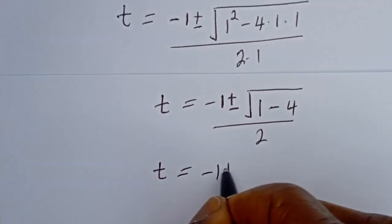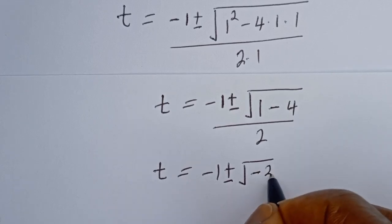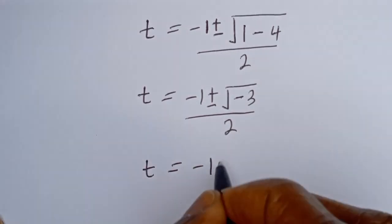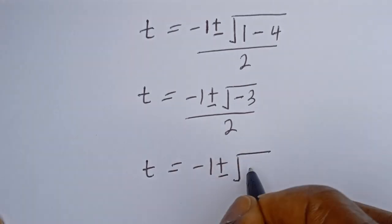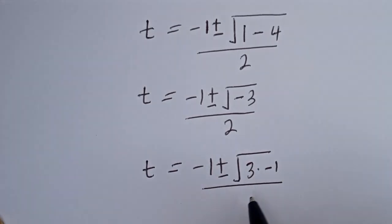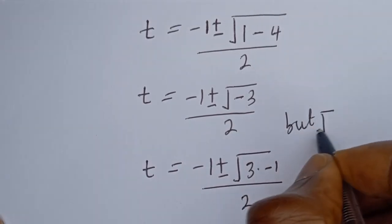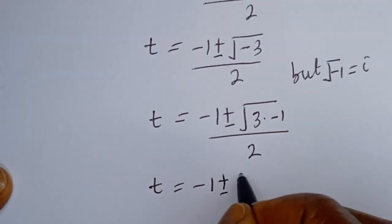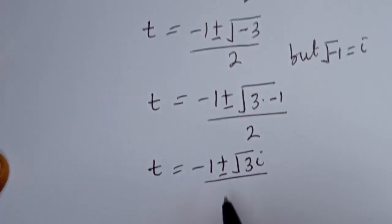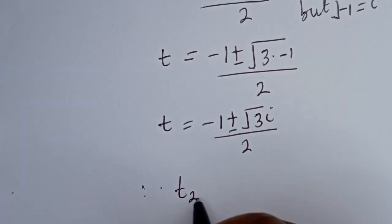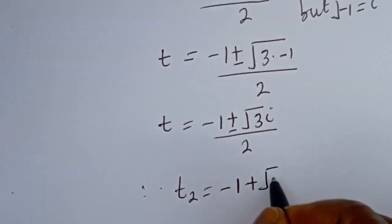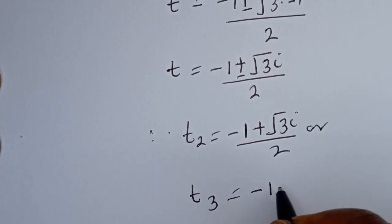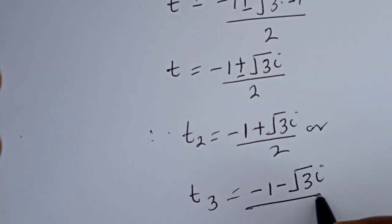Then t equals (−1 ± √(−3)) / 2. Since the square root of −1 equals i, we have t = (−1 ± i√3) / 2. Therefore, t = (−1 + i√3) / 2 or t = (−1 − i√3) / 2.